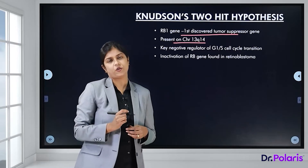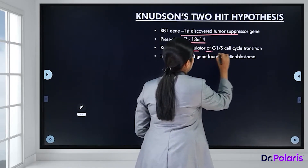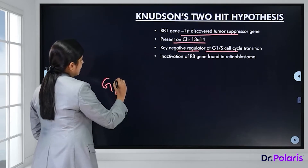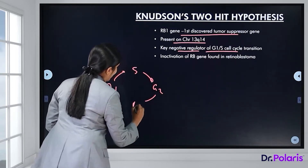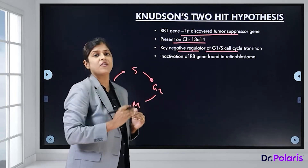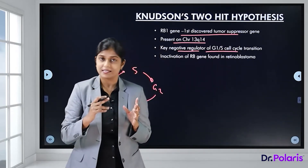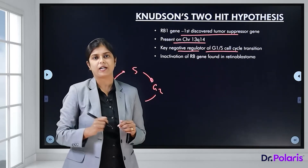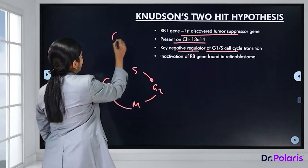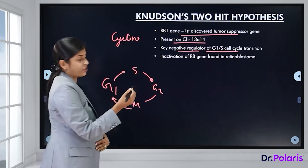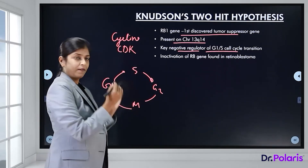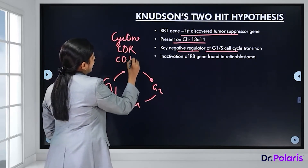The retinoblastoma gene is a negative regulator of the G1-S cell cycle transition. The cell cycle has four phases: G1, S, G2, and M. The retinoblastoma protein halts the cell in the G1 phase, because once the cell progresses past G1 it is bound to complete mitosis. Many proteins are needed for the cell cycle, including cyclins, cyclin-dependent kinases, and cyclin-dependent kinase inhibitors.